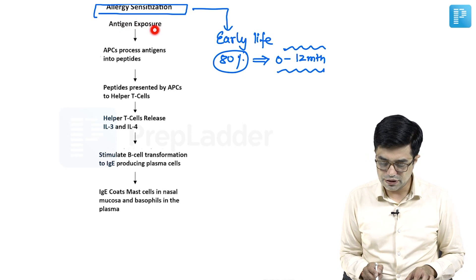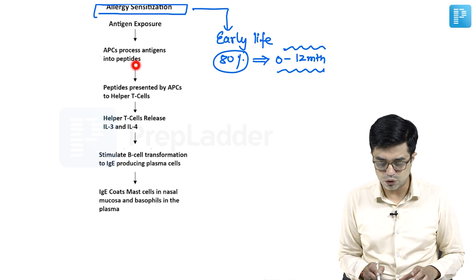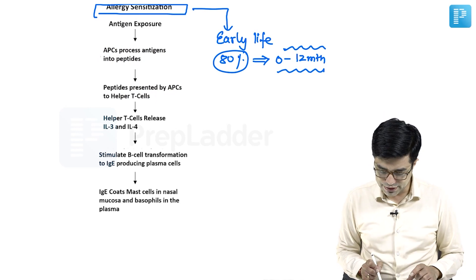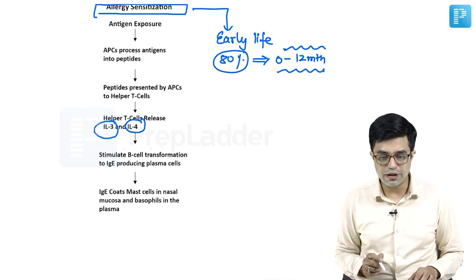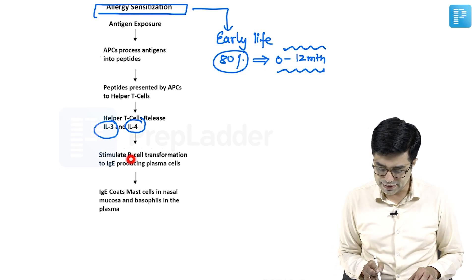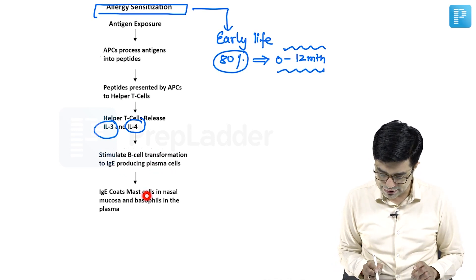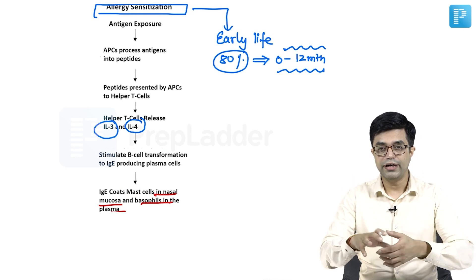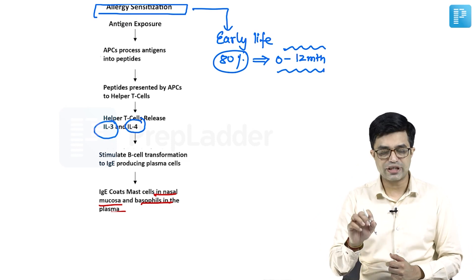There is antigen exposure which leads to antigen presenting cells like macrophages. They process the antigens into peptides. These peptides are presented by antigen presenting cells to the helper T cells. Helper T cells produce two types of interleukins — interleukin-3 and interleukin-4. These two interleukins stimulate the B cells to form plasma cells which produce IgE. This IgE coats the mast cells in the nasal mucosa and basophils in the plasma. That process is called allergic sensitization.